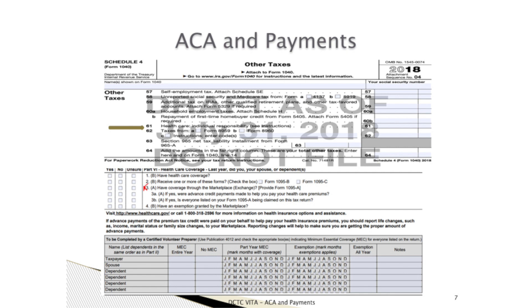Minimum essential coverage comes in many forms and is defined in Publication 4012 page H-6. Recall from Form 13614-C Part 6: if the taxpayer answers yes to question 1, that's great. If they answer yes to number 2, the taxpayer should have with them a Form 1095-B or Form 1095-C, which represent employer-offered health insurance plans. Number 4 speaks to an exemption granted by the marketplace. If the taxpayer has been granted a marketplace exemption, they will have a letter with the exemption code and the year of the exemption.